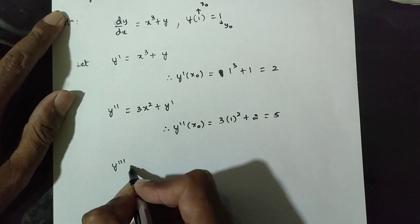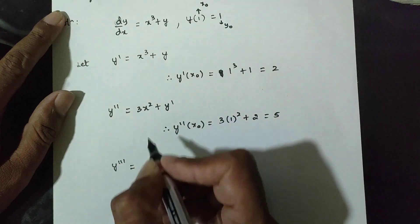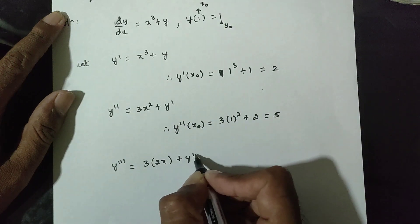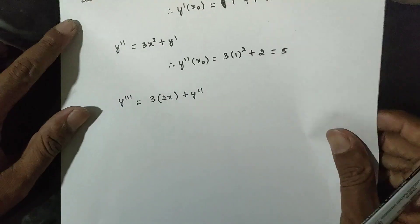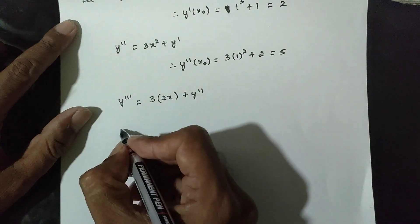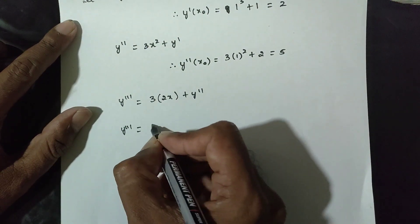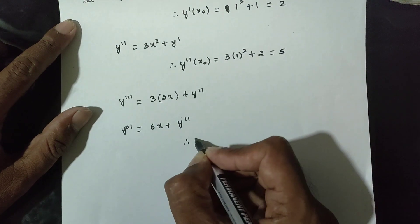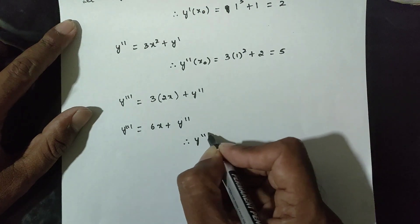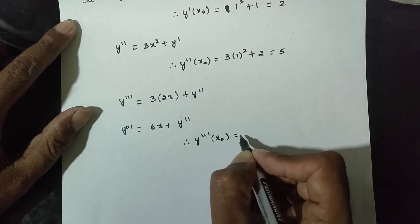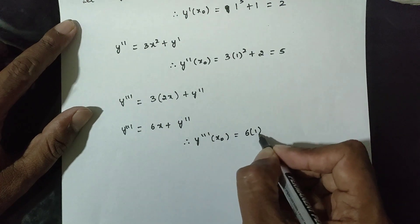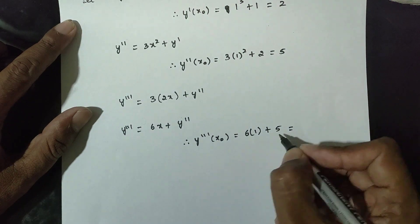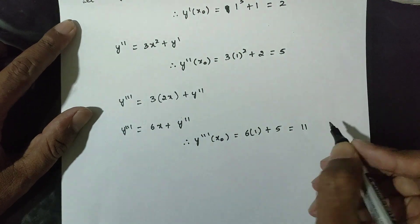y double-dash equals 6x plus y double-dash. Therefore y triple-dash of x₀ equals 6 into 1 plus y double-dash, which is 5. So 6 plus 5 equals 11, therefore y triple-dash of x₀ equals 11.